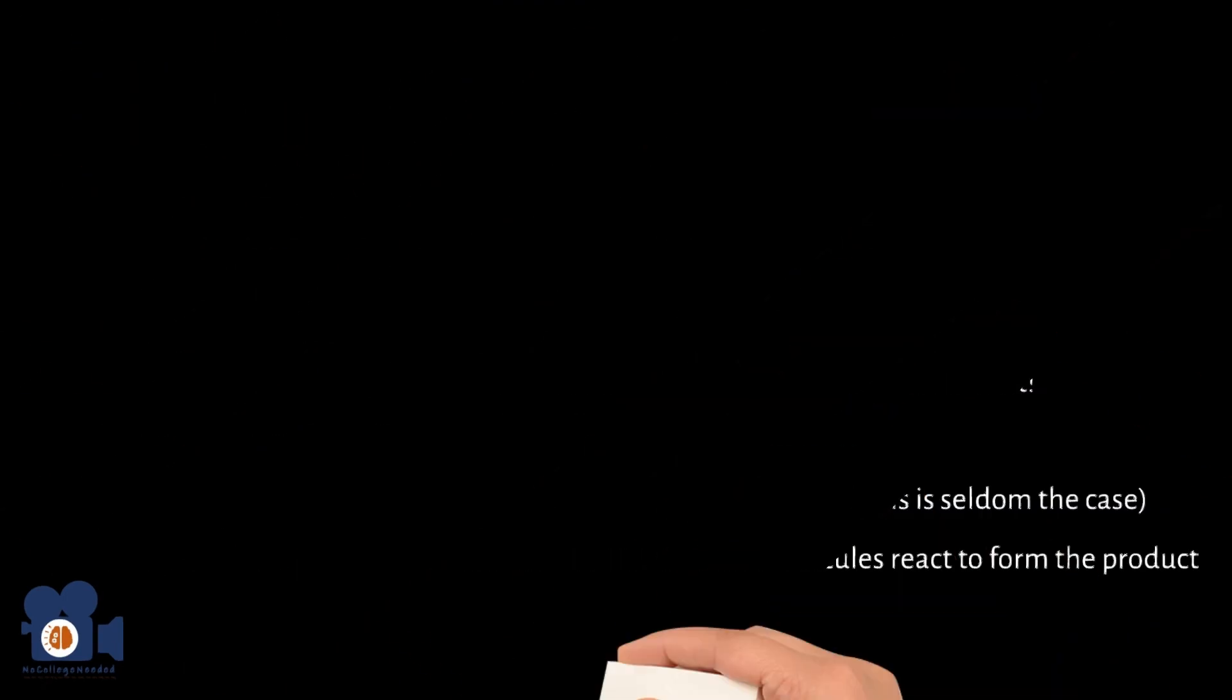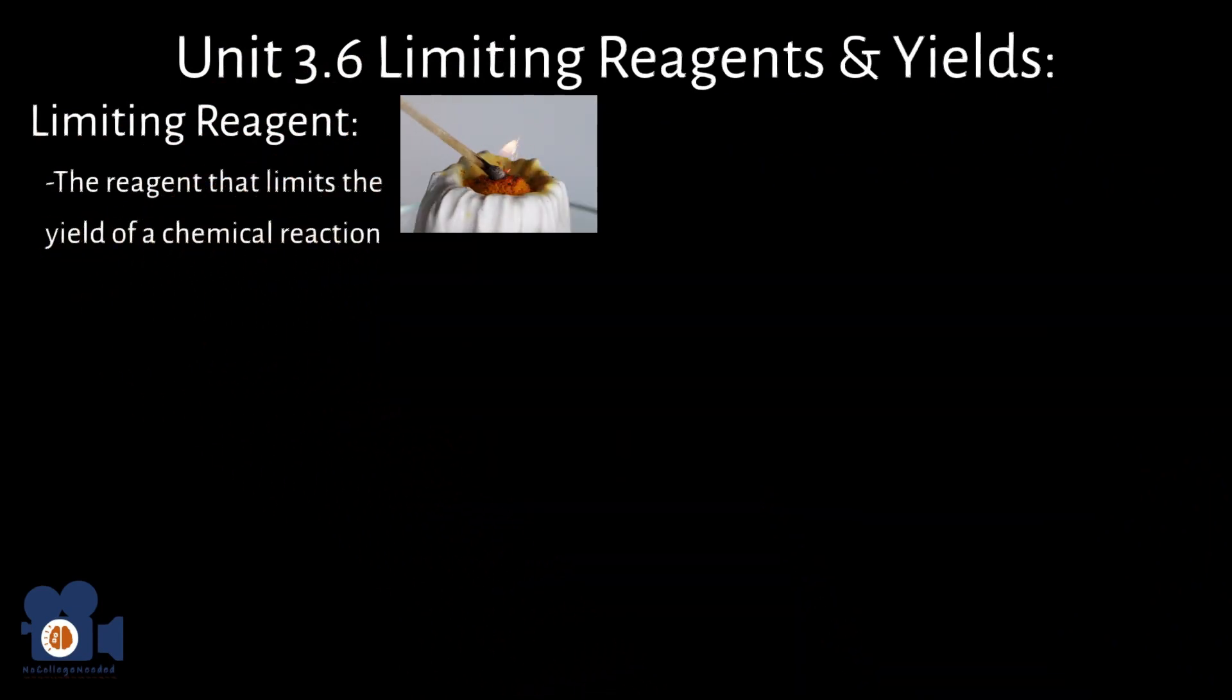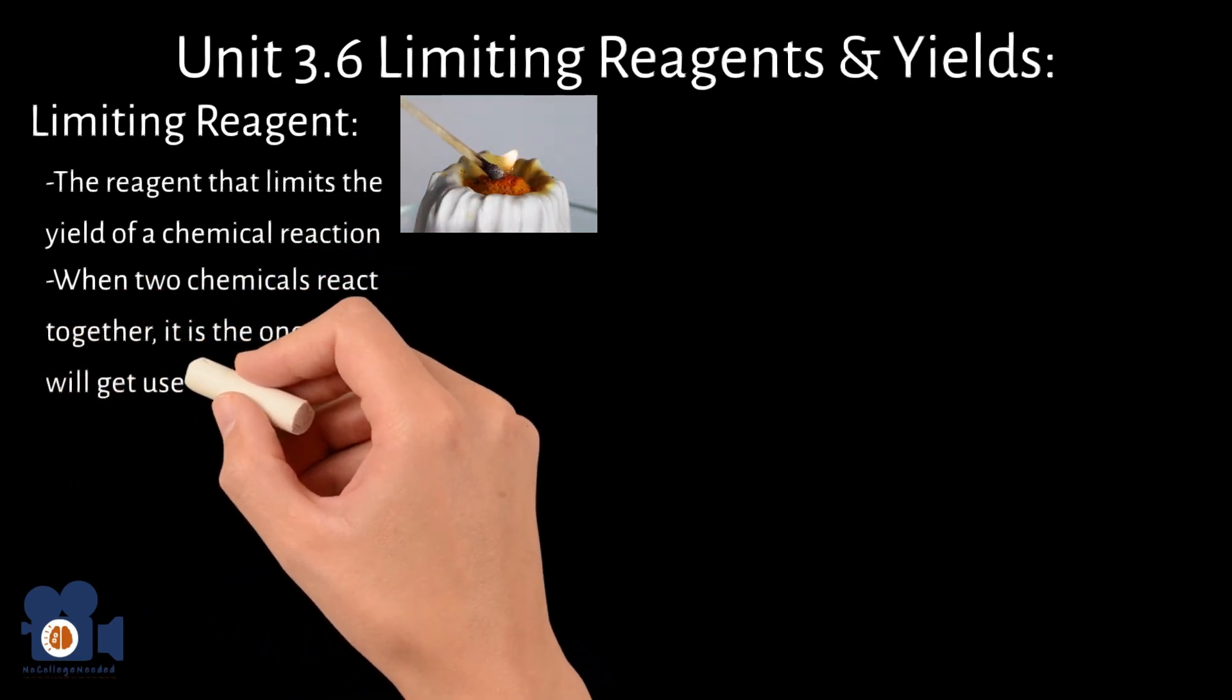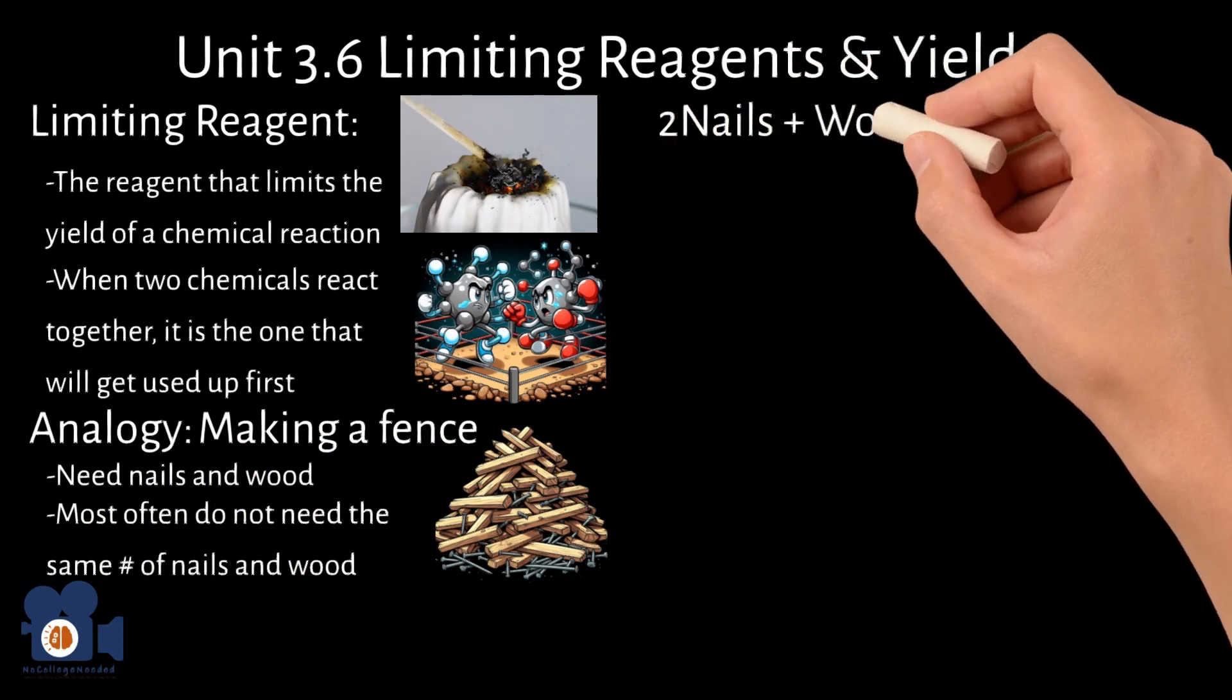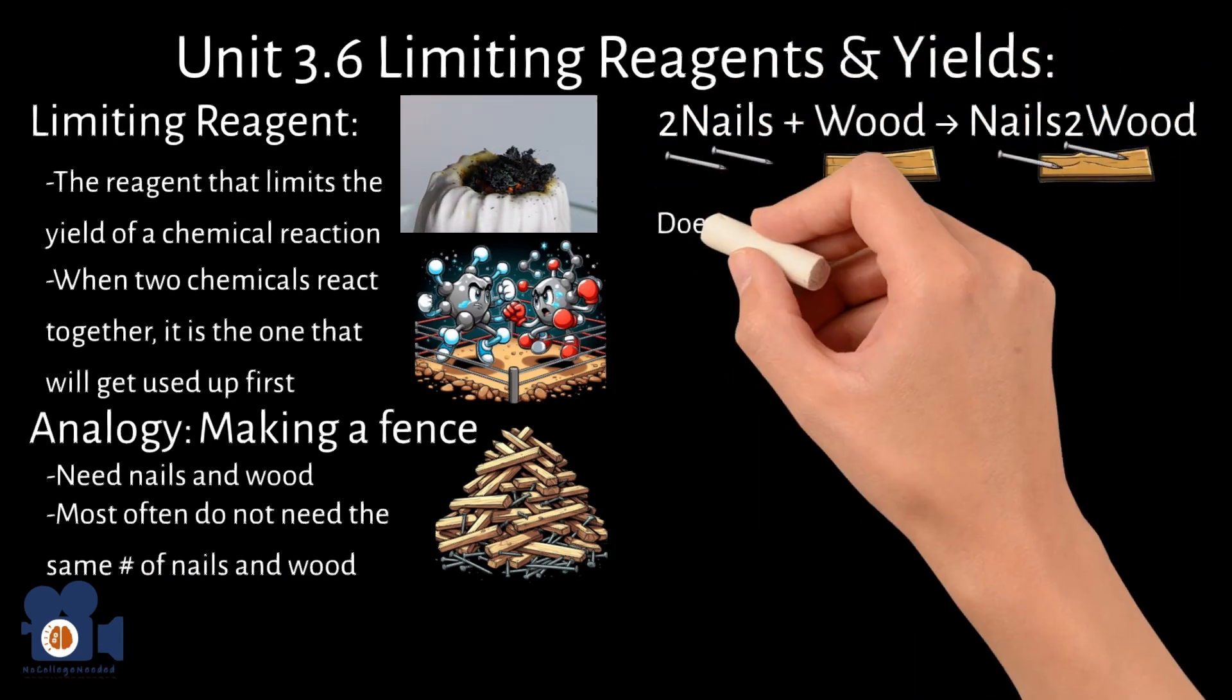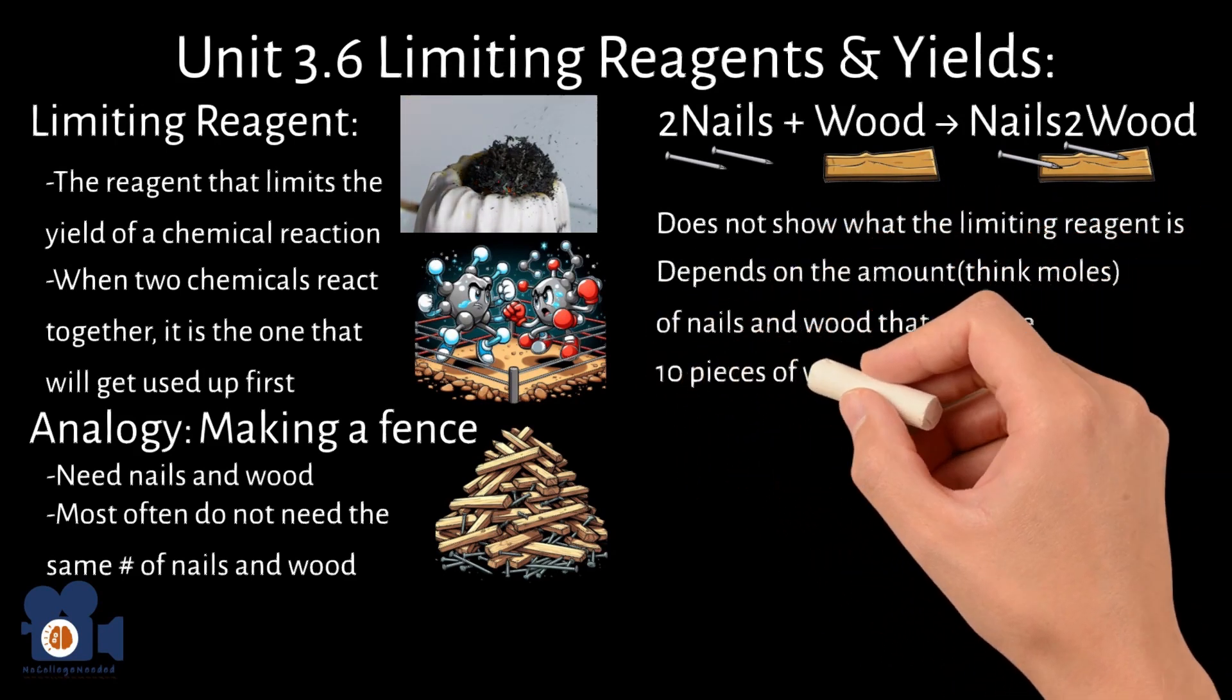Unit 3.6: Limiting Reagents and Yields. A limiting reagent is the reagent that limits the yield of a chemical reaction. Another way to think of it is when two chemicals react together, it is the one that will get used up first. A great analogy is the one we used in the previous unit, making a fence. To make a fence, you need nails and wood, but you most often do not need the same number of nails and wood. We can write the reaction of making a fence as such: Two nails plus one wood going to nails two wood. Just looking at the equation, we do not know what the limiting reagent is. It depends on the amount of nails and wood we have. Let's say we have 10 pieces of wood and 10 nails.